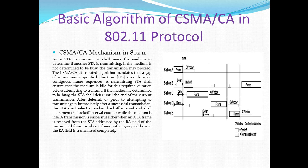A transmitting station shall ensure that the medium is idle for this required duration before attempting to transmit. If the medium is determined to be busy, the station shall defer until the end of the current transmission. After deferral, or prior to attempting to transmit again immediately after a successful transmission, the station shall select a random backoff interval and shall decrement the backoff interval counter while the medium is idle.